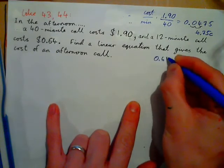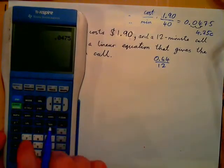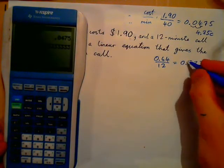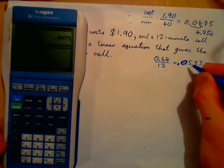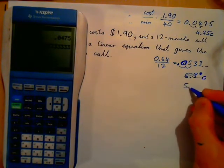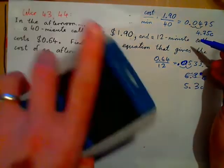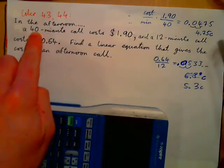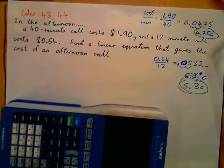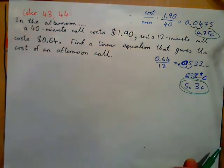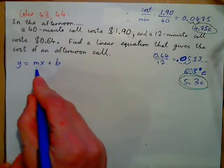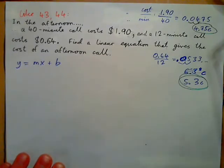But let's look at the other situation: $0.64 over 12 gives 0.0533, which is about 5.3 cents per minute. So at the same time of day, a 40-minute call costs 4.75 cents per minute and a 12-minute call costs 5.3 cents per minute — why aren't they the same? Because there is a base fee involved. We need to find an equation where m is the cost per minute and b is the connection fee.